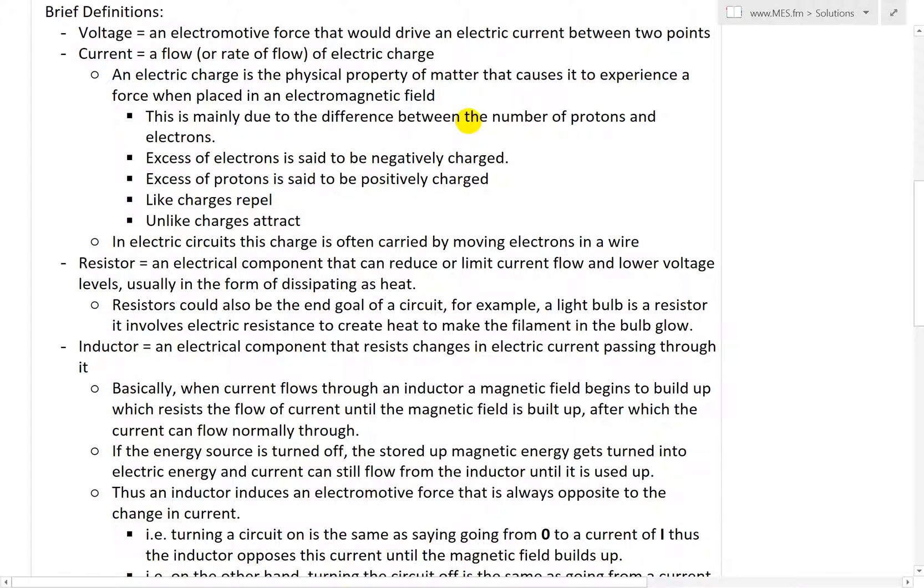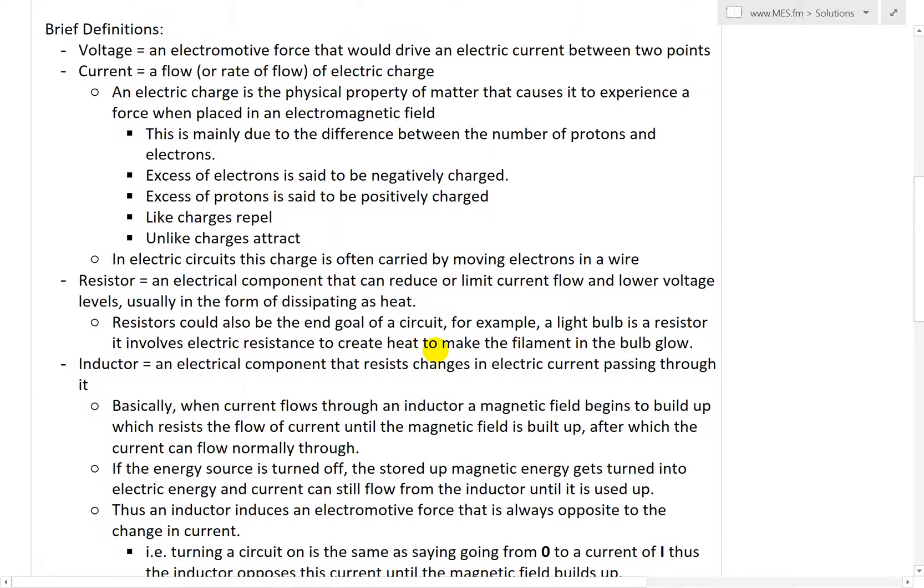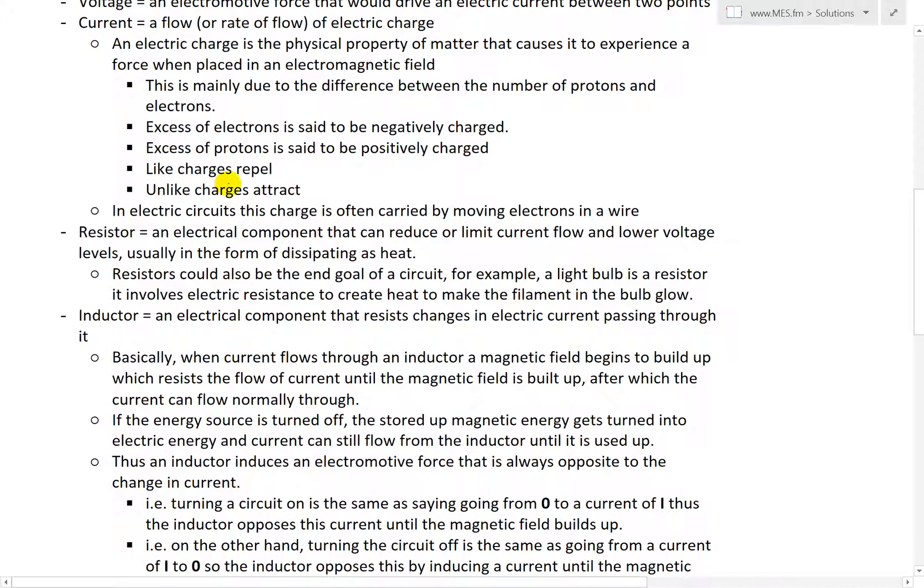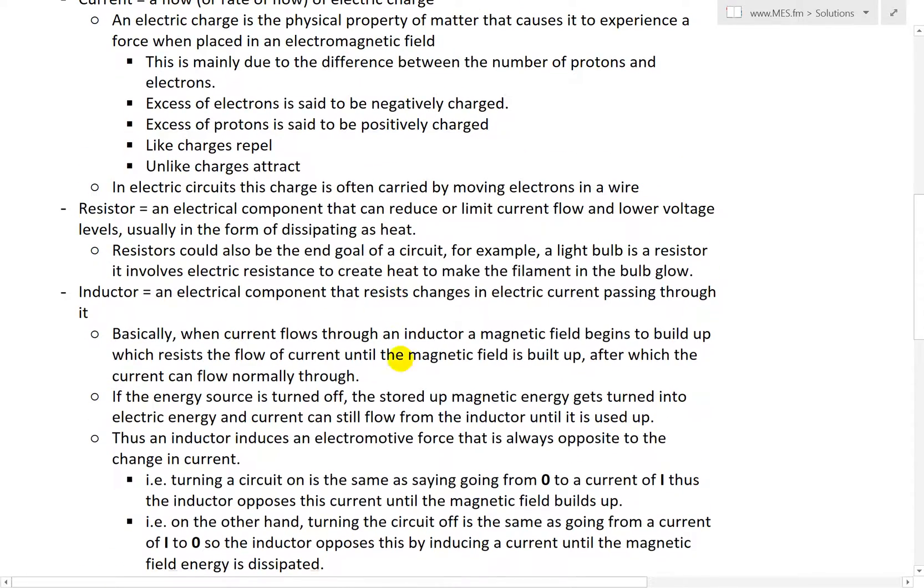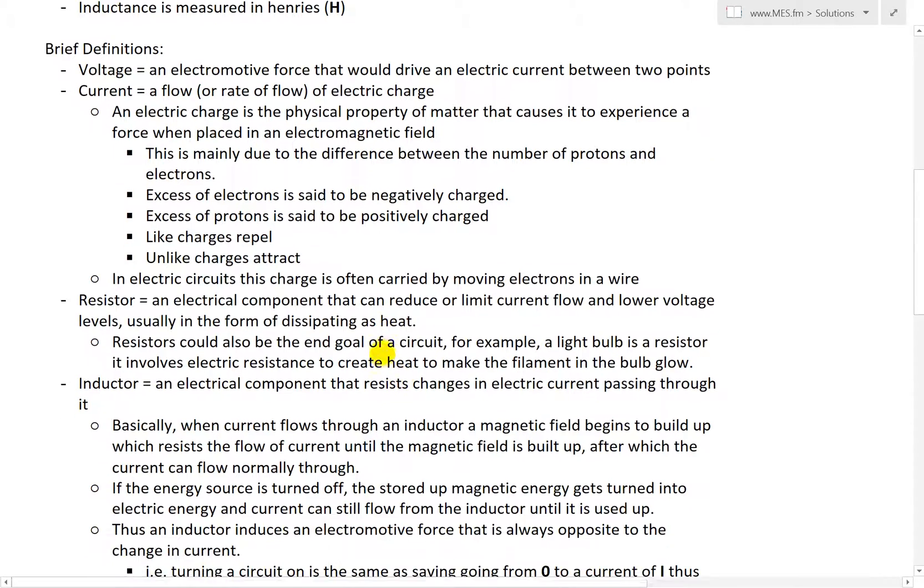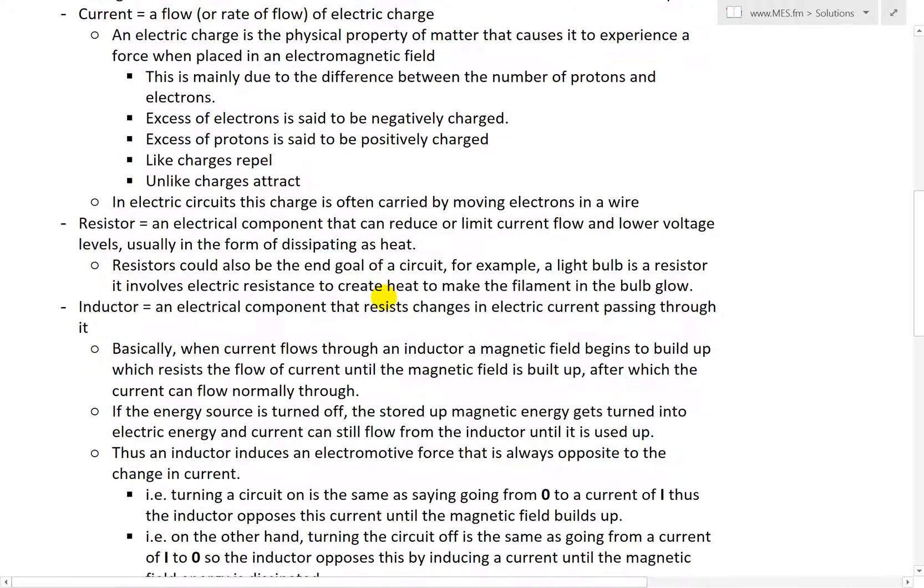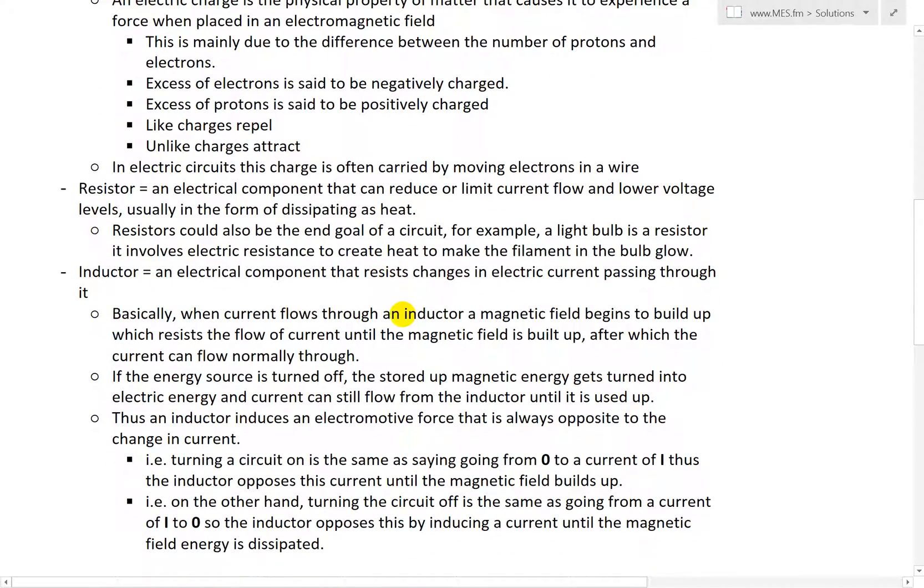This is mainly due to the difference between the number of protons and electrons. An excess of electrons in any substance is said to be negatively charged, and excess of protons is said to be positively charged. Like charges repel from each other, unlike charges attract - positive protons and electrons attract each other.